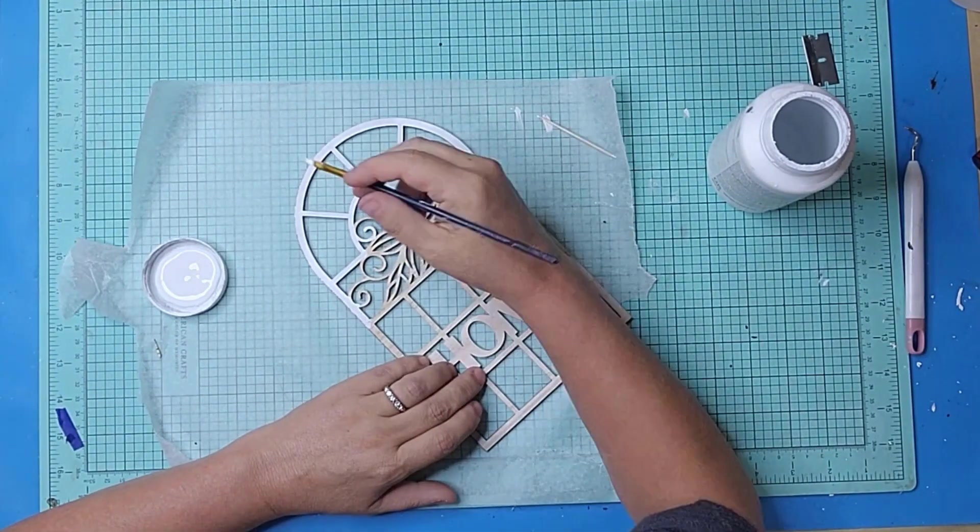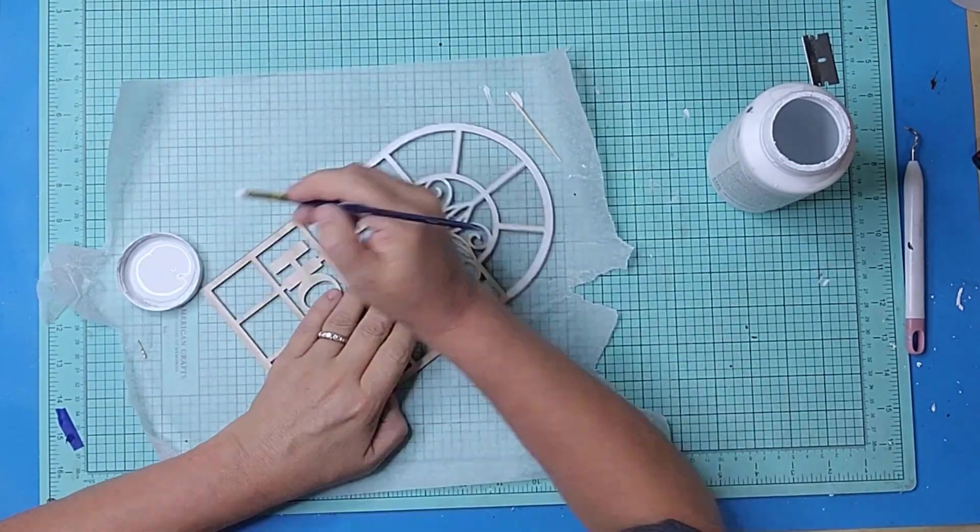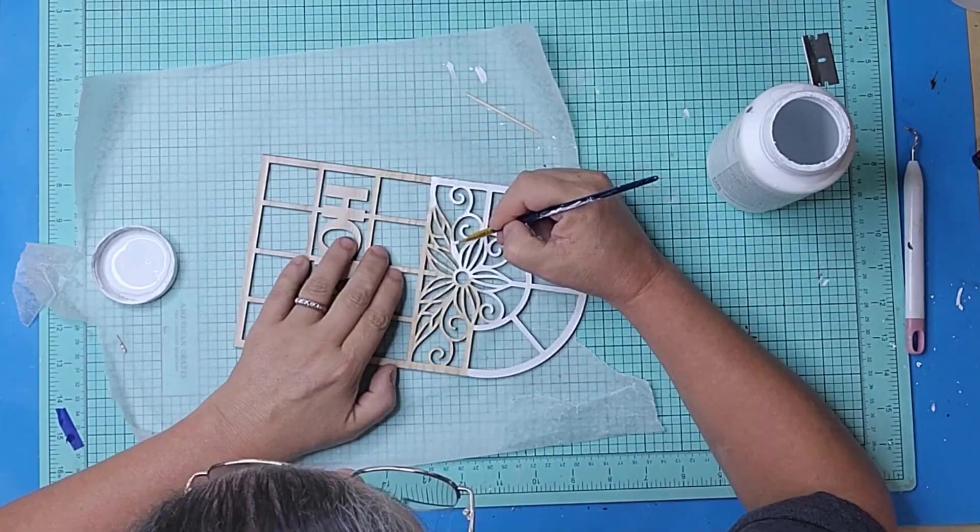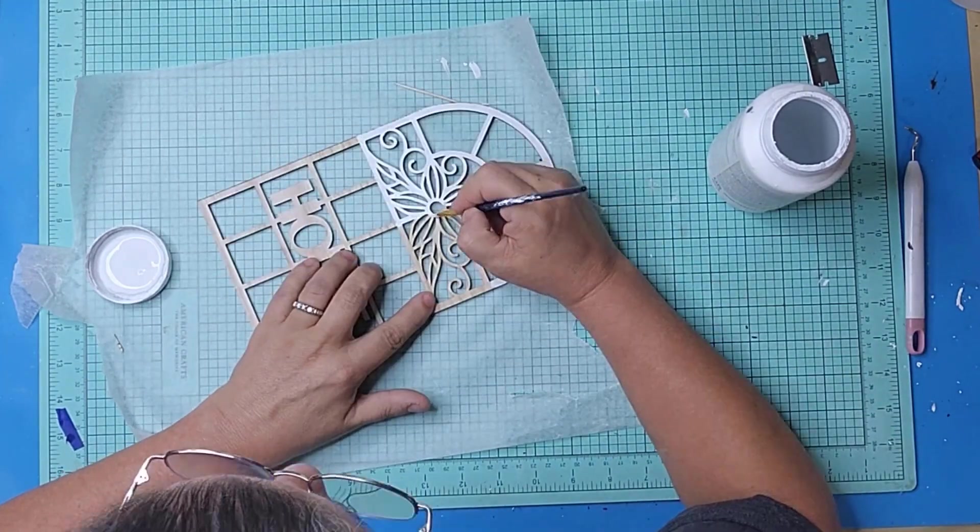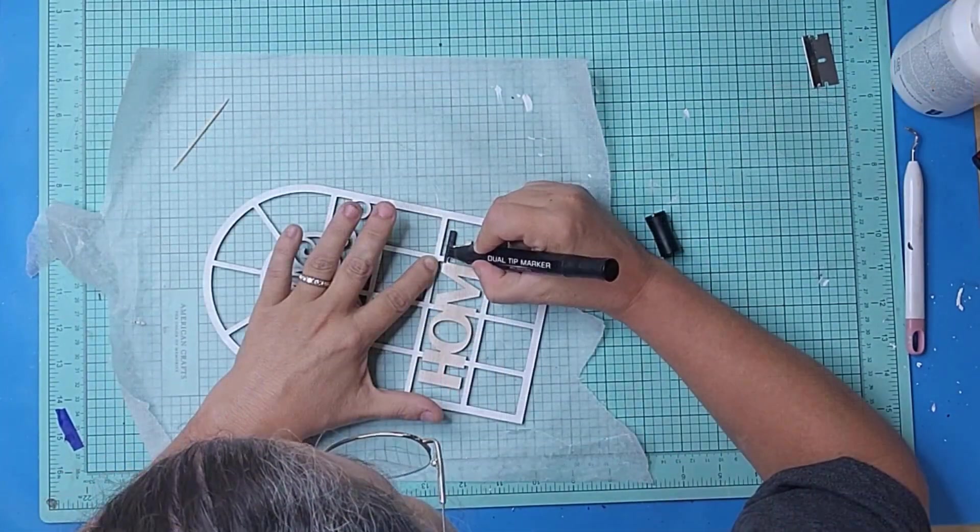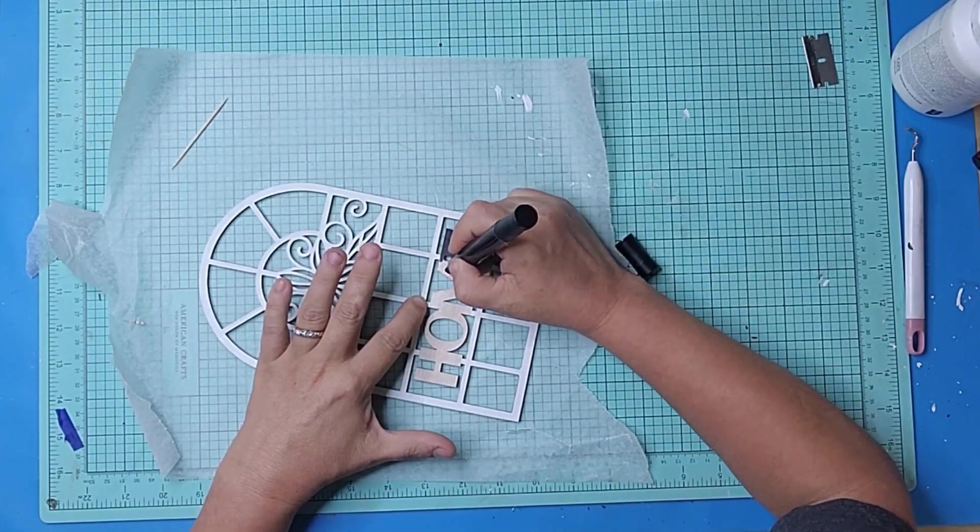I painted the window panes with white chalk paint. And then used a dark alcohol marker for the word home.